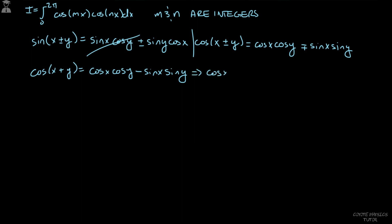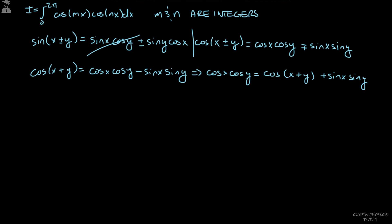To solve for cosine x cosine y, we add sine x sine y to both sides and get: cosine x cosine y = cosine(x+y) + sine x sine y. But if we plug this into the integral, we end up with two different trig functions multiplying each other — the same problem as before. So instead, we try using cosine of x minus y.